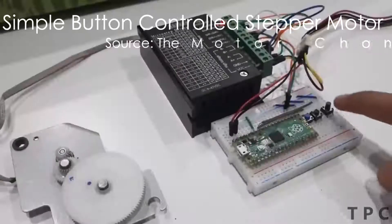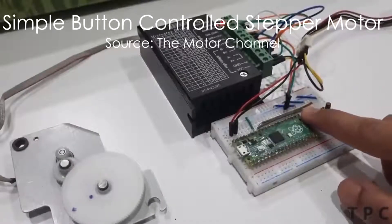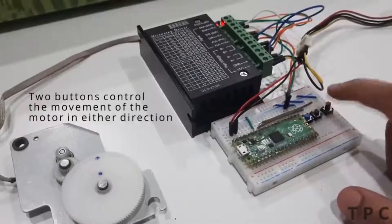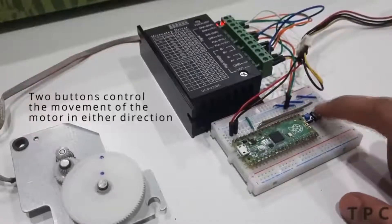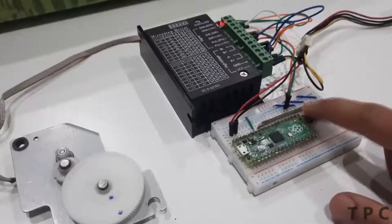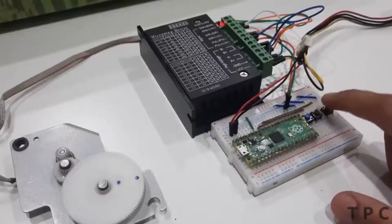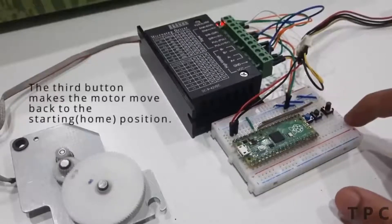This project requires three switches and a Raspberry Pi Pico to control the movement of the stepper motor. Two buttons make the motor rotate in either direction, so the left button rotates the motor in anti-clockwise direction while the right one rotates it in clockwise direction. The third button brings back the stepper motor to its home position.